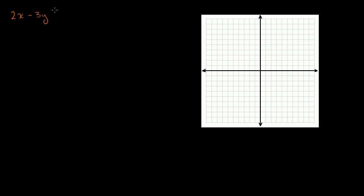Let's start with our first linear inequality: 2x minus 3y is less than or equal to 21. We've seen how to graph this before — you can just graph this line and then figure out what the less than part means. Let's rearrange this into slope-intercept form. If you subtract 2x from both sides, we get negative 3y is less than or equal to negative 2x plus 21.